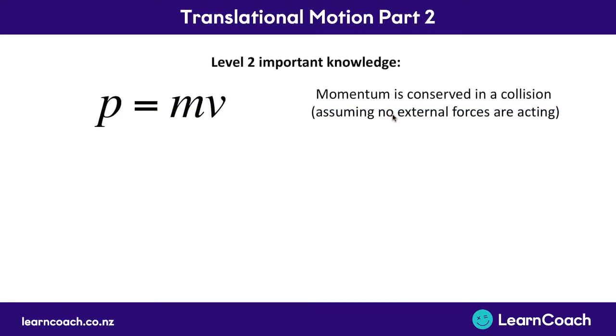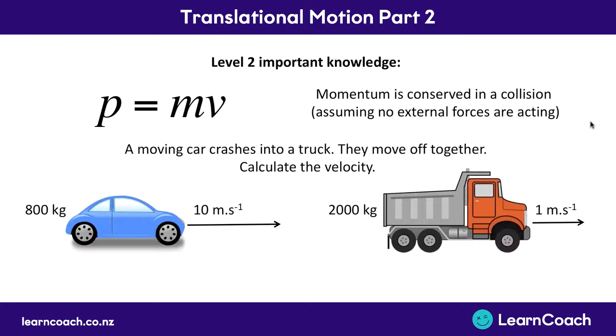Now the second important thing from level two is following on from this momentum. It's that momentum is conserved in a collision as long as no external forces are acting. So you would have seen some kind of question like this. A car crashes into a truck, they lock together and they move off together. Now we need to calculate the velocity after the collision.